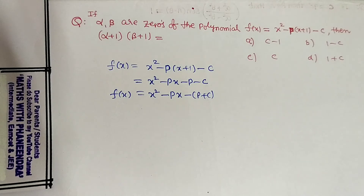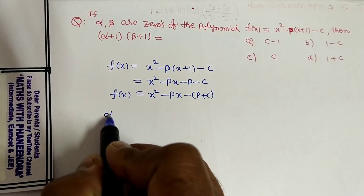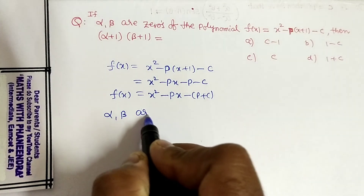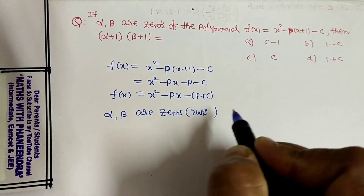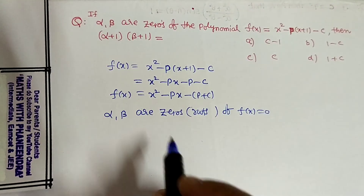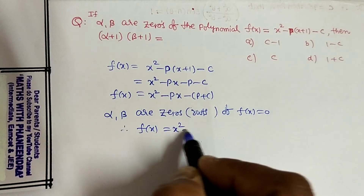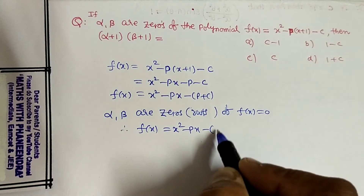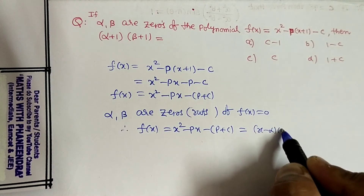For this polynomial, alpha and beta are the zeros. Zeros of the polynomial is nothing but roots of the polynomial. So alpha, beta are zeros means roots of f of x equal to 0. Therefore, f of x equal to x squared minus p x minus of p plus c equals x minus alpha into x minus beta.